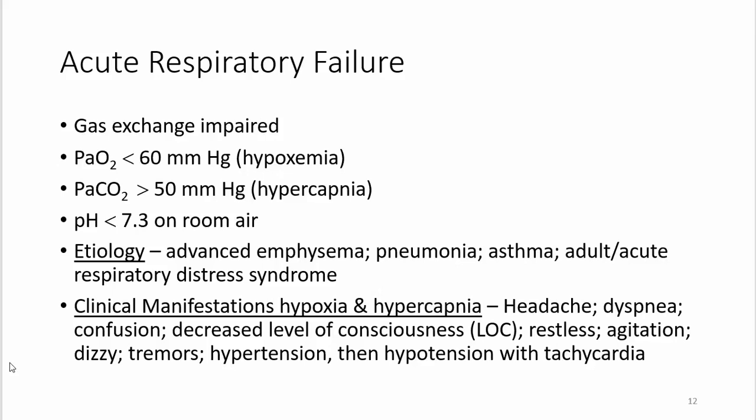Acute respiratory failure is when the partial pressure of oxygen in the blood drops below 60 mmHg — that's hypoxemia. Normally blood oxygen levels are around 100 mmHg; below 60 is very serious. When the partial pressure of carbon dioxide gets above 50, we have hypercapnia, which will affect pH. The hypercapnia leads to too much carbonic acid, causing the pH to drop below 7.3.